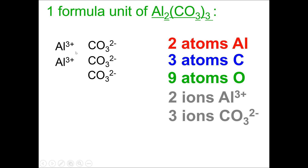If you look at the formula and think it's a lot of work to write this all out, you can just look at the formula directly. The 3 on the outside of the parentheses represents 3 ions of carbonate, the 2 represents 2 ions of aluminum, and when determining atoms you can distribute the 3 through — but don't actually distribute it when writing the formula.